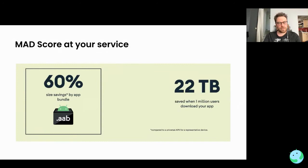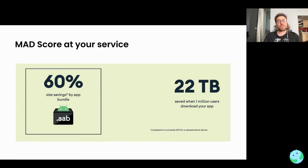Google also made a plugin on Android Studio called the MAD Score, which lets you see the advantage of going with Android App Bundle if you're not yet using it. It's a very nice tool — you get some stats about your application and the libraries you're using. When we ran the MAD Score on our app, we got about 60 percent savings from using Android App Bundle.